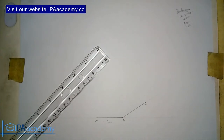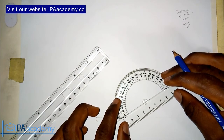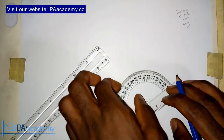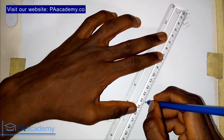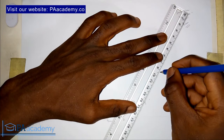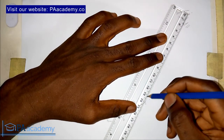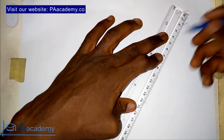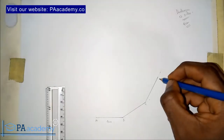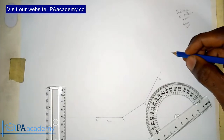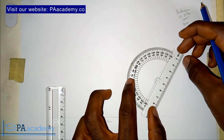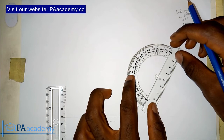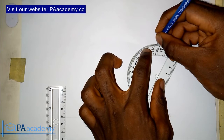I'll bring back my protractor and place it on point C, then measure 30 degrees again. From point C to where I have my 30-degree mark, I'll draw a faint line and count four centimetres. There's a reason why I'm extending with a faint line — by the time I place my protractor, this extended faint line helps my protractor rest on it easily, so I can confirm it is properly placed on any point I'm putting it.